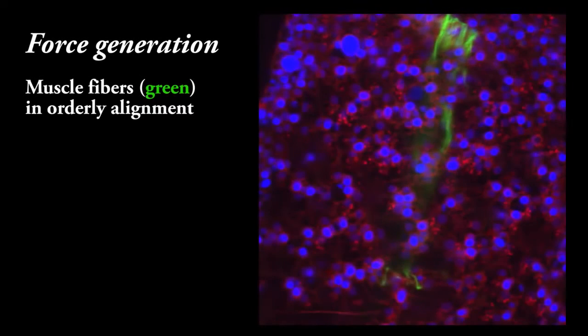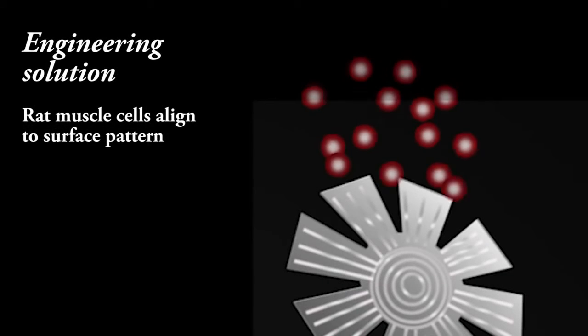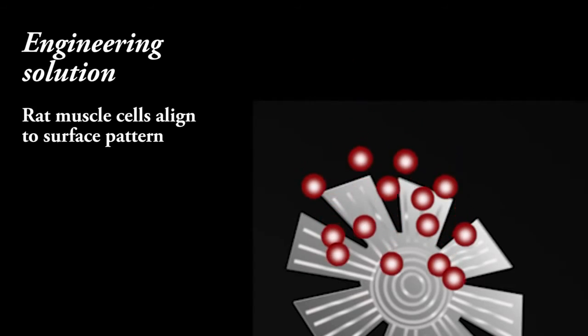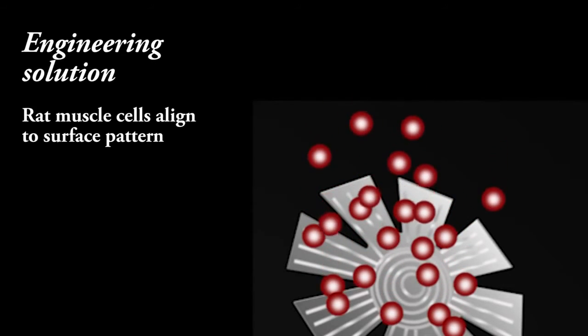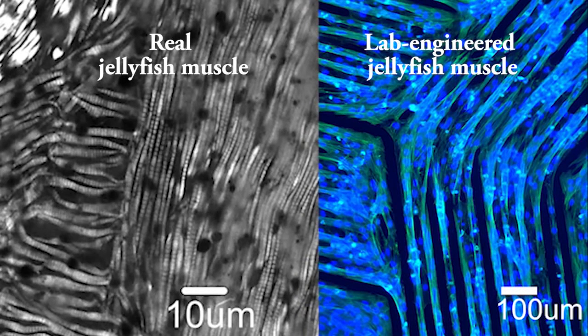Another design principle is the orderly alignment of the jellyfish muscle fibers that is necessary for forceful contraction. In the engineered jellyfish we achieve comparable alignment by providing freshly seeded muscle cells with a surface pattern, a kind of roadmap for growth.